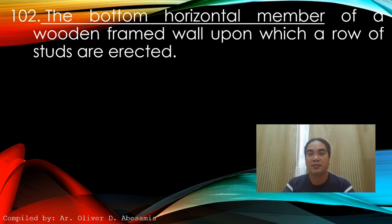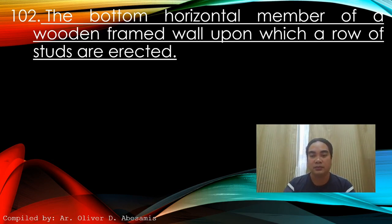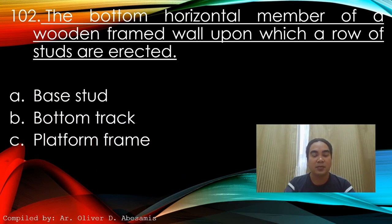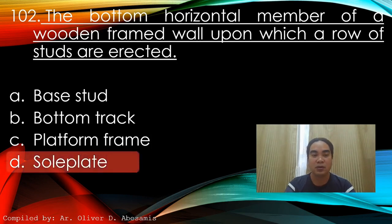Question 98: The bottom horizontal member of a wooden frame wall upon which a row of studs are erected. A) Base stud, B) Bottom truck, C) Platform frame, D) Sole plate. Answer: D) Sole plate.